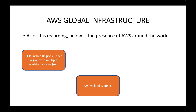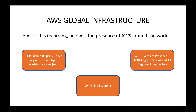This is to make the data center disaster recovery highly available. Even if one availability zone goes down, we still have the other availability zone where we can access the resources. We also have 450 plus points of presence — 400 plus edge locations and 13 regional edge caches.